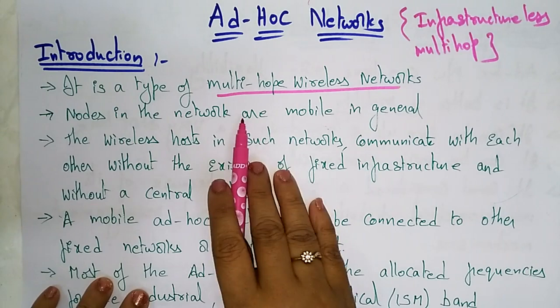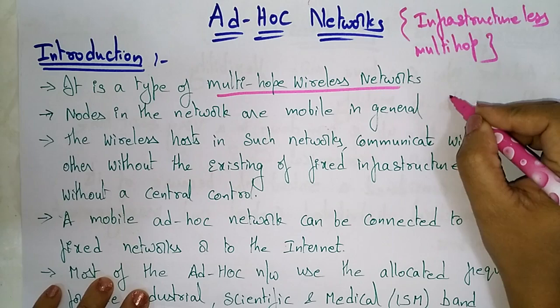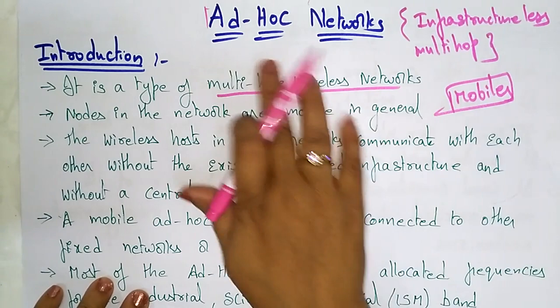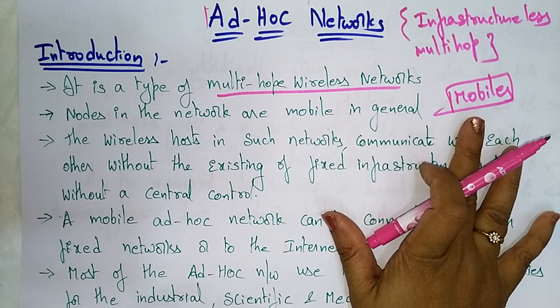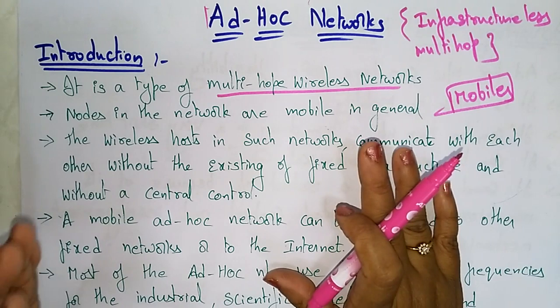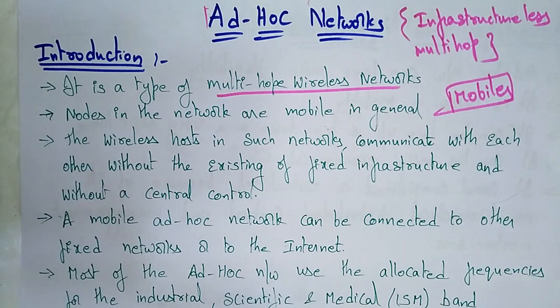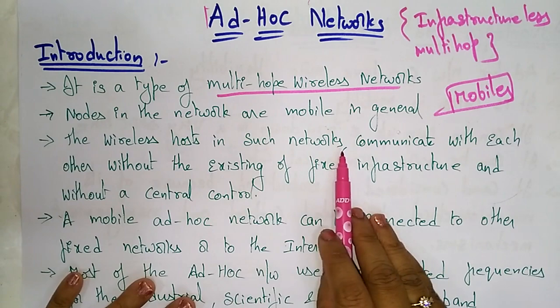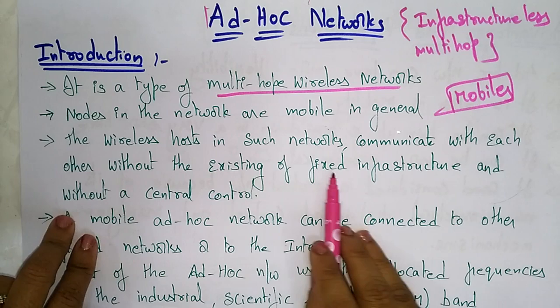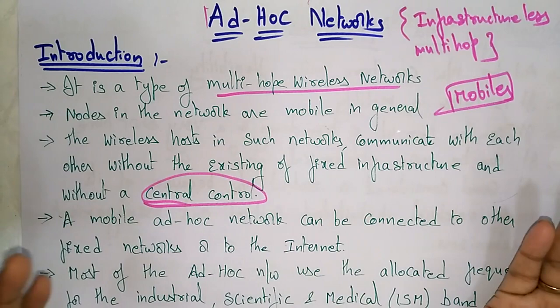It is a type of multi-hop wireless network. Nodes in the network are generally mobile, so ad hoc networks mainly work on mobiles. If you want to communicate directly from mobile to mobile, you can go for ad hoc networks. For single-hop communication, you can use Bluetooth directly; for multi-hop, you have to work on ad hoc networks.